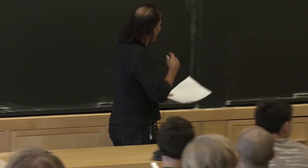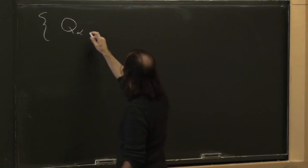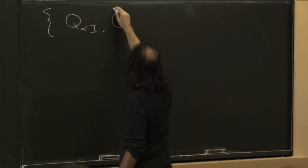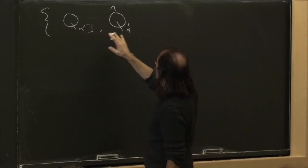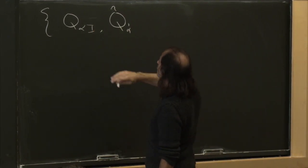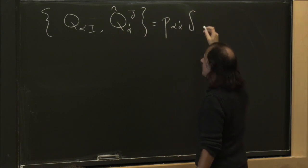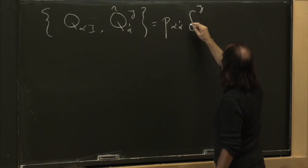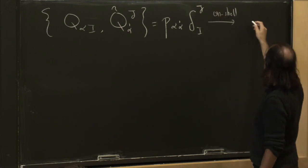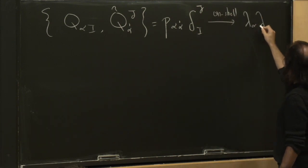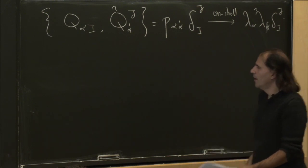So the SUSY algebra — and if you don't care about algebras, you can ignore this part — gives us a bunch of generators Q and Q-tilde that anticommute with each other. In general they anticommute to a momentum operator. But acting on these on-shell states, the momenta are just equal to lambda times lambda-tilde. So we get a formula like lambda, lambda-tilde, delta_ij.